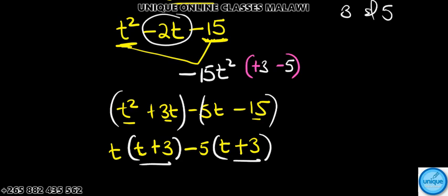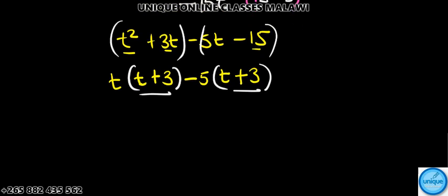So the quantity is t plus 3. Whenever you have different brackets, we factor them out. The other bracket will be a combination of these factors which you have here.